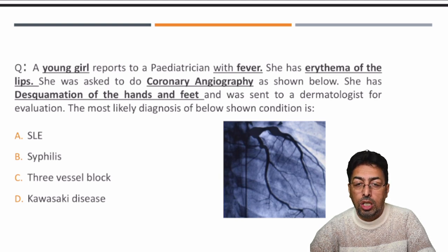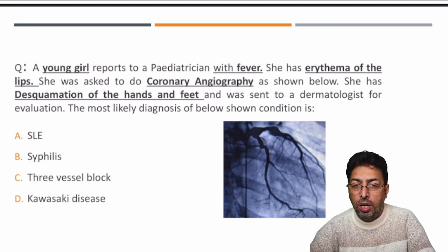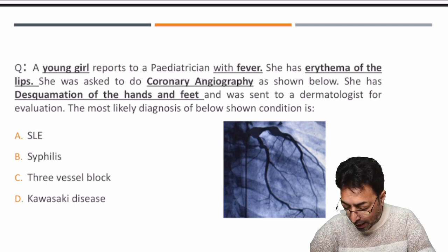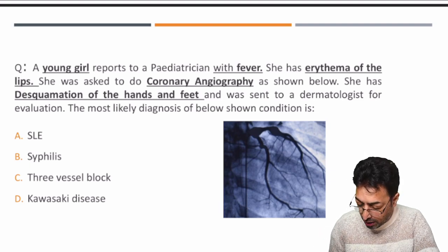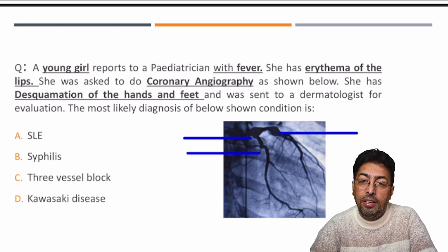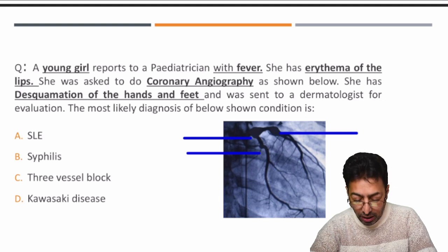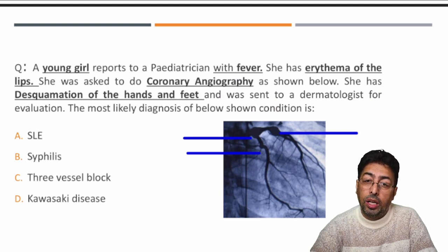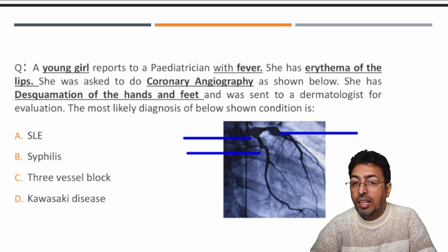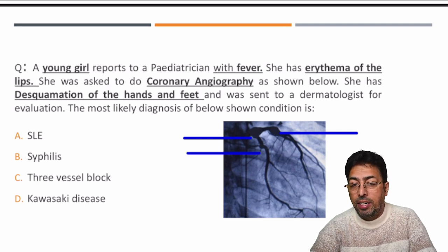Option C is three-vessel block, but looking at the image, I cannot identify any blockage of the coronary vessel. Instead, looking at the labeled photograph, you can see certain dilatations of the coronary arteries — these are most likely coronary aneurysms. So a young girl with fever, erythema of the lips, and coronary angiography showing coronary aneurysms — what is this clinical condition? If you have studied your pediatrics and medicine well, you can arrive at the diagnosis immediately.